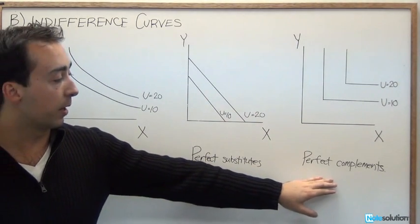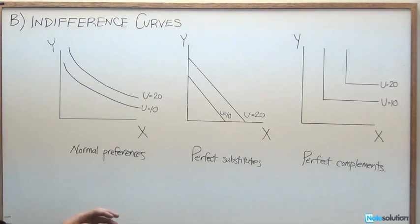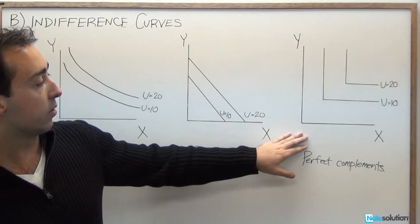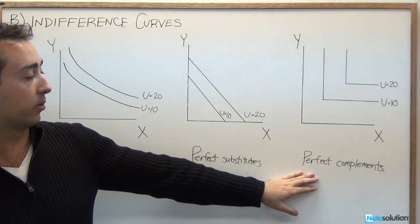In the last case, we're going to look at perfect complements. This is another kind of exception to the normal preferences situation. Here, what's going on? Well, first I'm going to start you off with an example.